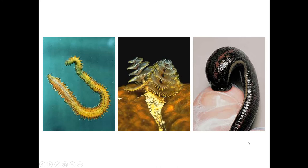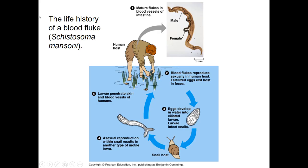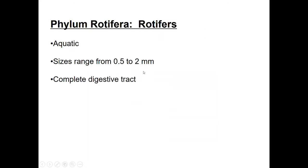Here's a Christmas tree worm and a leech. Life history of a blood fluke: step one, a mature fluke in the blood vessels of the intestine, because they need a host — a human host here. Step two, blood flukes reproduce sexually in the human host. Fertilized eggs exit the host in feces; eggs develop in water into ciliated larvae. Larvae infect snails, and asexual reproduction within the snail results in another type of motile larva. That larva penetrates the skin and blood vessels of humans, and the cycle continues.